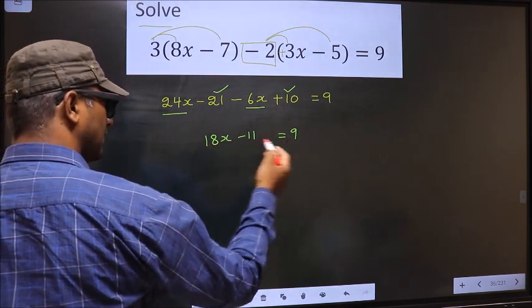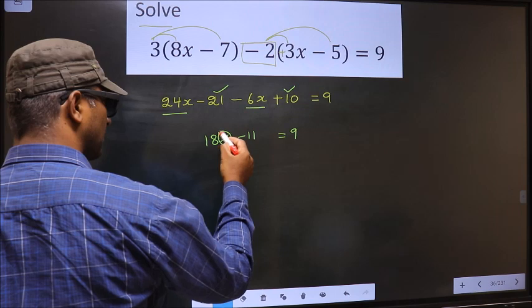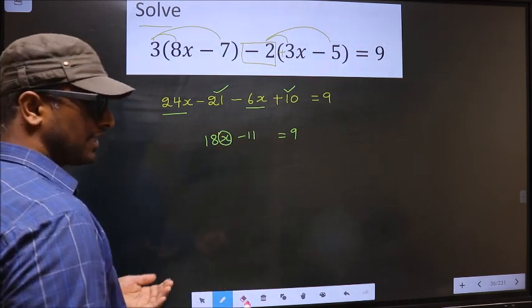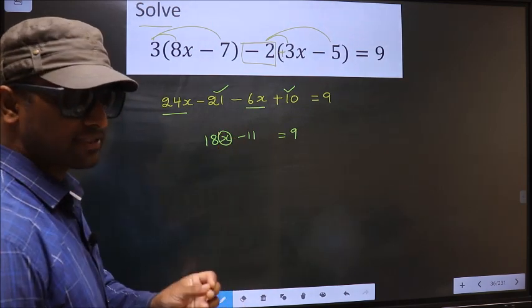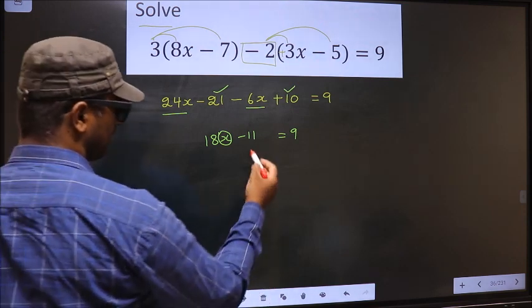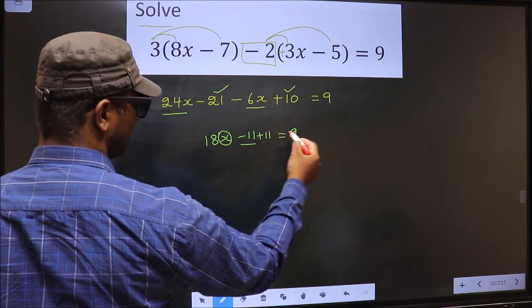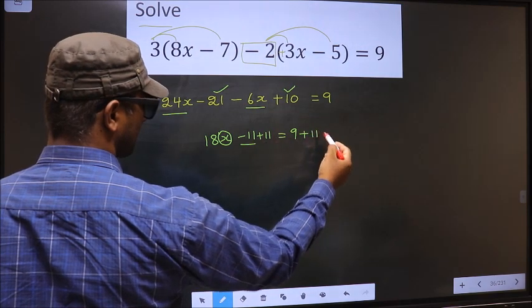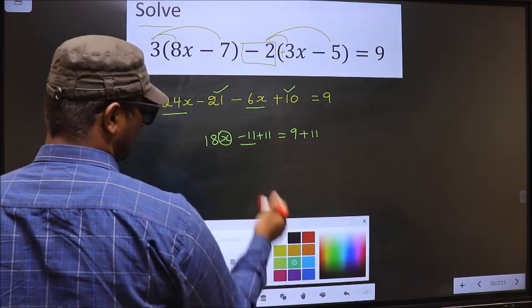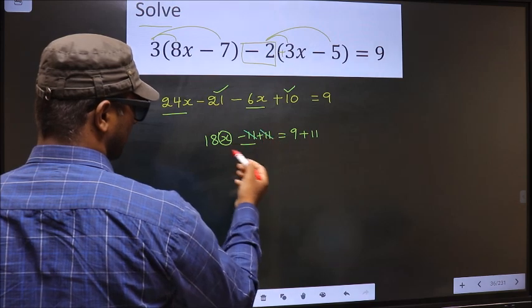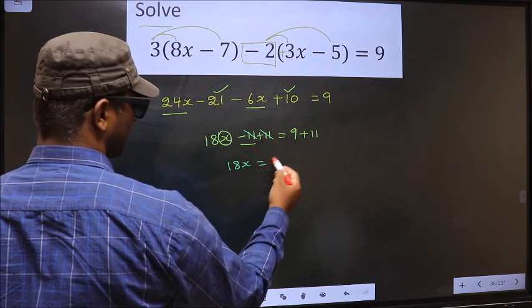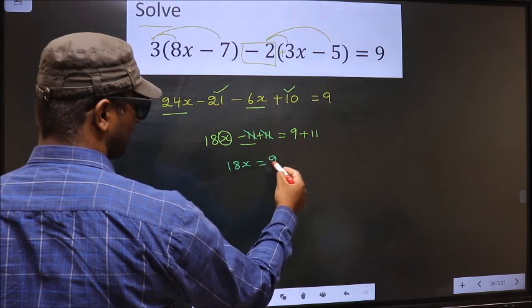Now in this equation x is present only in one place. So to get x value we should make x the subject. For that first we should remove minus 11. To remove minus 11 you add 11 on both sides. Now minus 11 plus 11 cancel out, you get 18x equal to 9 plus 11, 20.